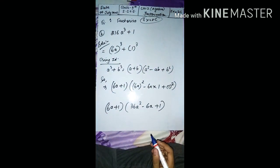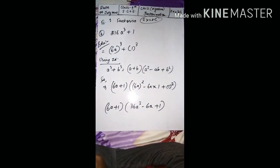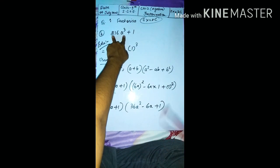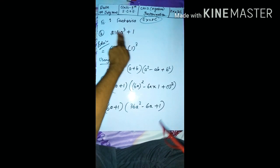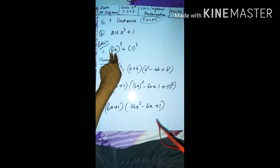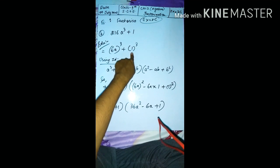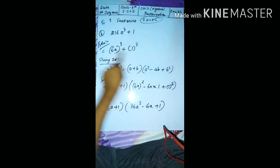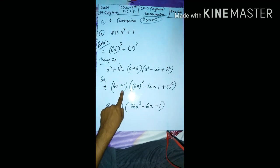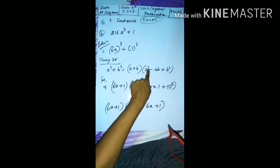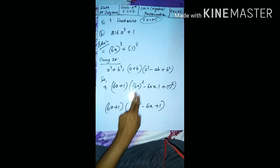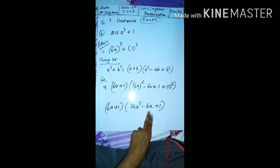The first four questions use the a³ + b³ identity. For question 1 part (b): 216a³ + 1. Note that 216 = 6³, so we write (6a)³ + 1³. Applying a³ + b³ = (a + b)(a² − ab + b²) with a = 6a and b = 1: answer is (6a + 1)(36a² − 6a + 1).